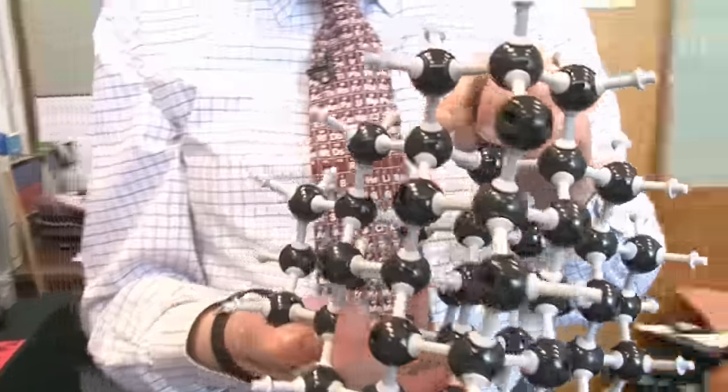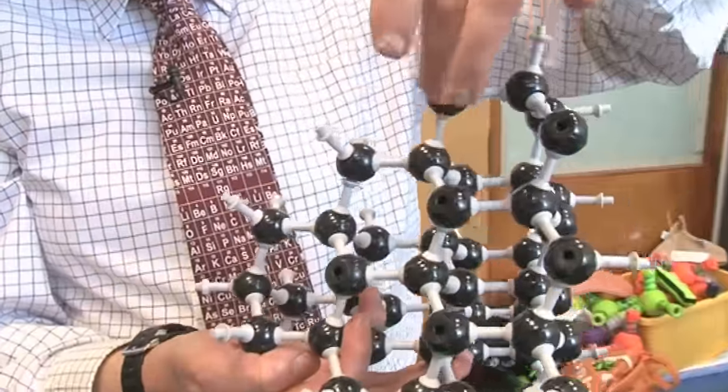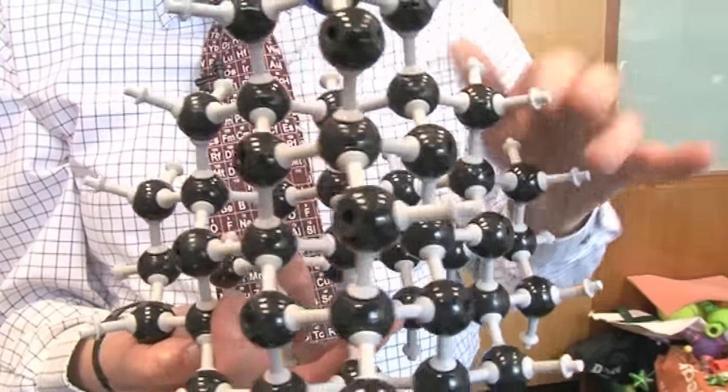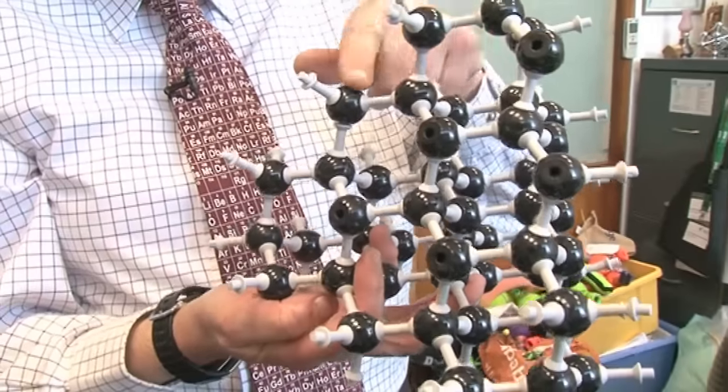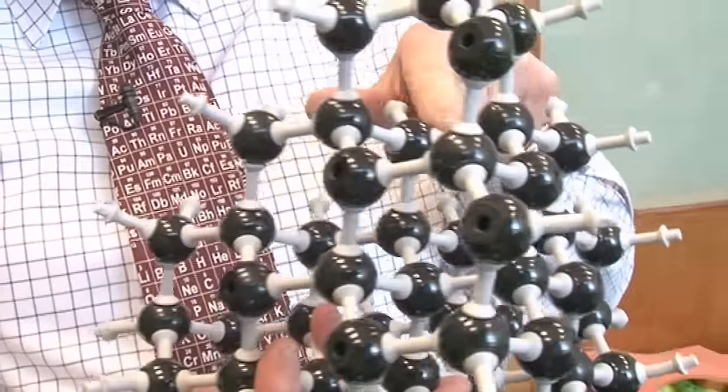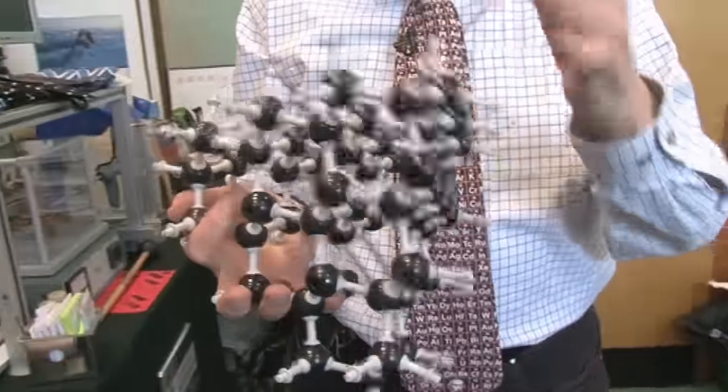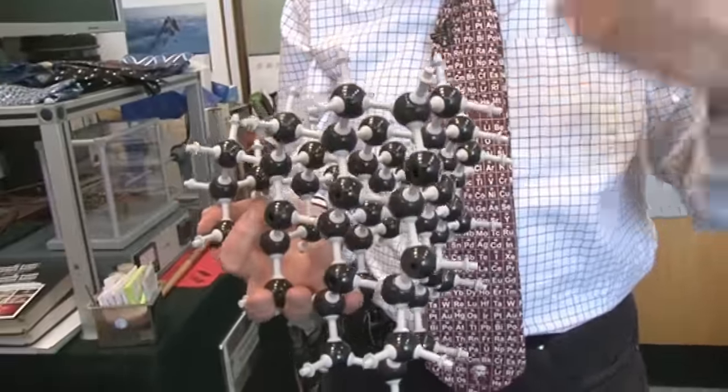There's this structure here, where each carbon atom is joined to four others in this sort of tetrahedral pattern. Tetrahedron is this group, one in the middle with four round it. And this is diamond. It's really very strong. Whichever way you squash it, it's strong. You can't peel off layers of diamond with a piece of sellotape.